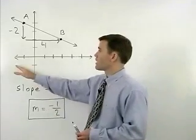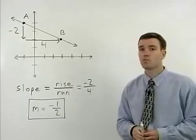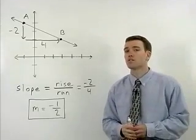If you read the graph from left to right and your line is going uphill like it was in the first problem, then your slope must be positive.